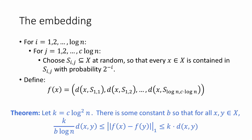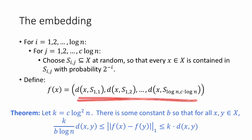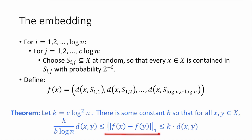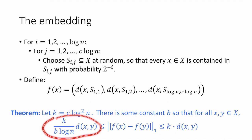So we're going to prove the following theorem. Let k be c log squared n — note that k is the number of coordinates in this vector. Then there is some constant B so that for all x and y in capital X, the L1 distance between f(x) and f(y) — the distance in the embedding — is sandwiched between k times the distance between x and y above, and k times the distance between x and y divided by B log n below. Thus, this is an embedding with distortion B log n.